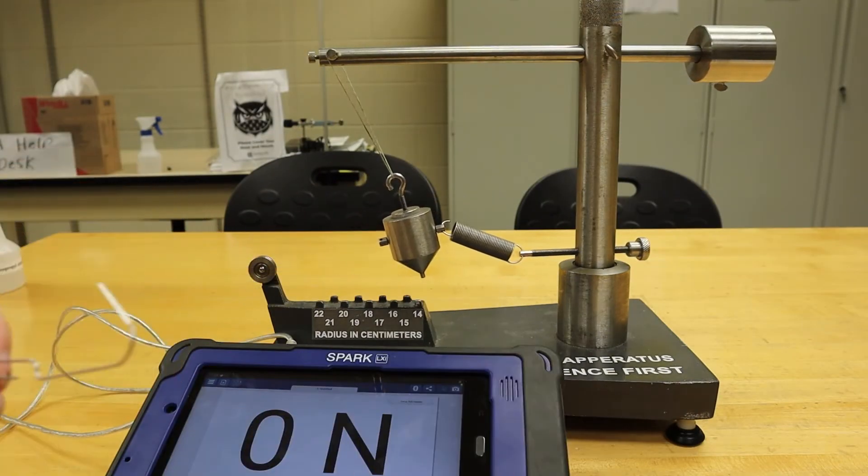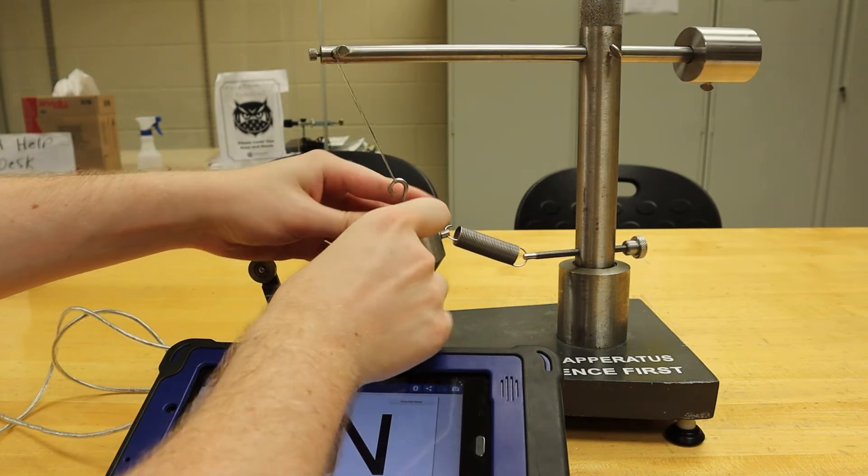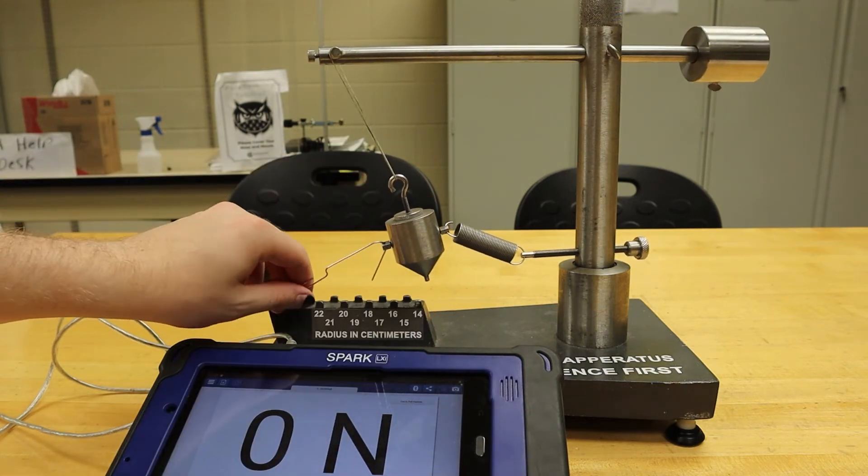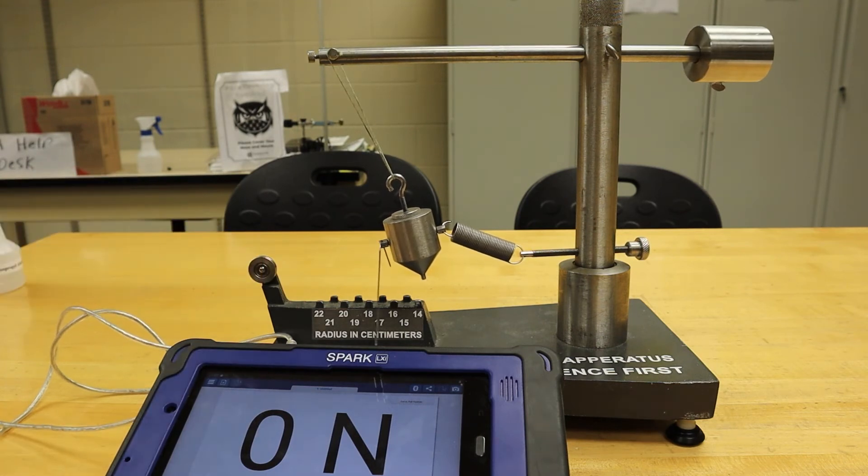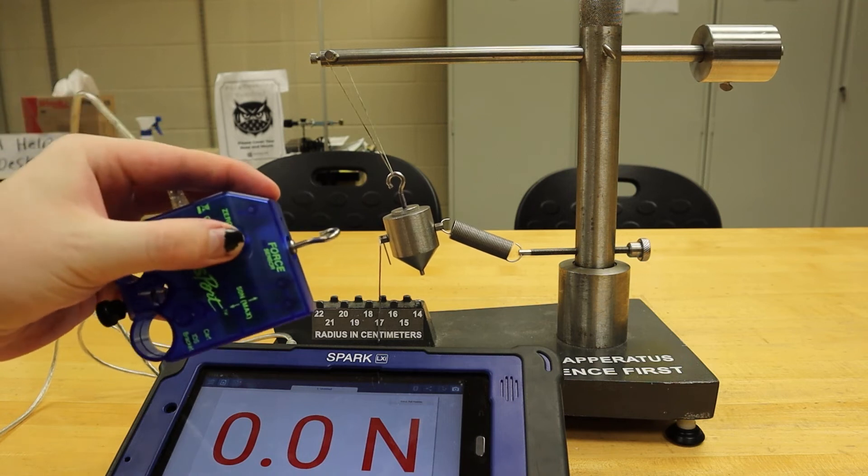We now need to obtain the amount of force it takes to pull the bob to the specific radius that we have determined. To do this, we will hook the paper clip onto the opposite side of the bob as the spring. We will then get our force sensor ready,